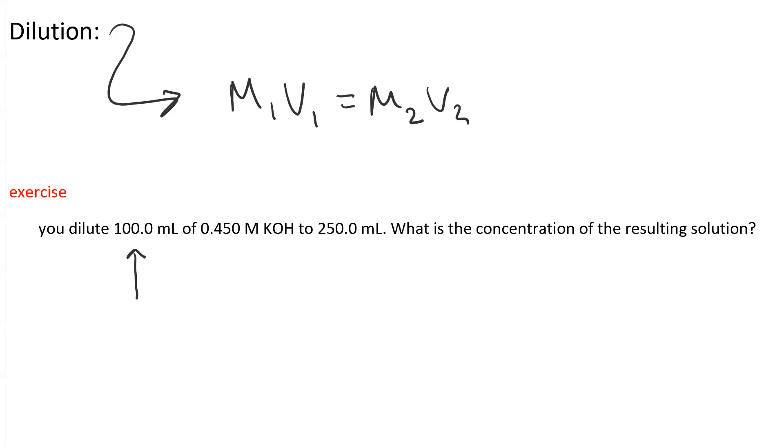First, let's decode our information. 100.0 milliliters, that's the initial volume that we have, so it's V1. 0.450 molar, that is our initial concentration, M1. 250.0 milliliters is our final volume. And so what we're trying to figure out is M2.